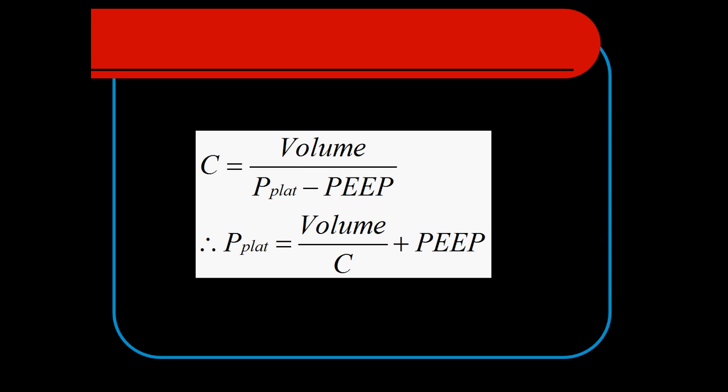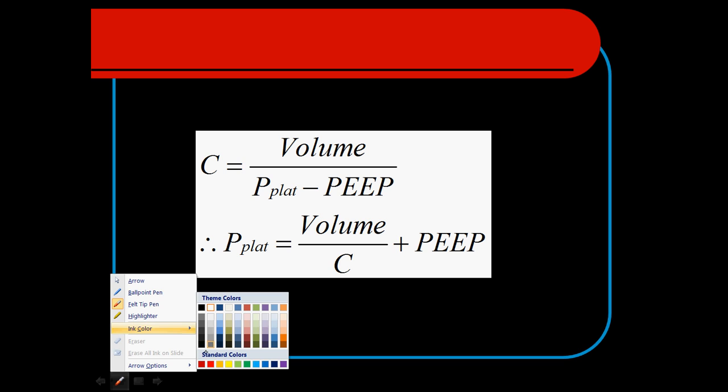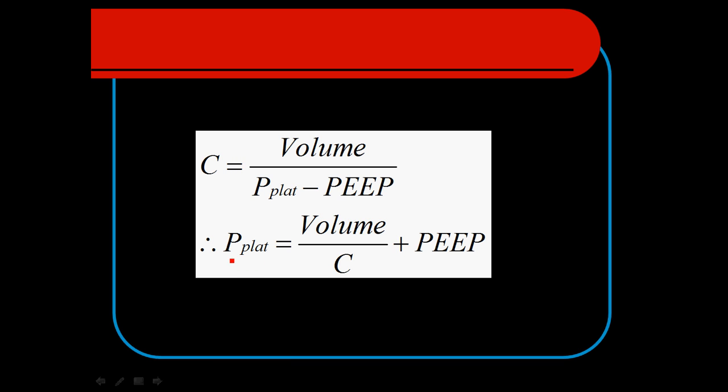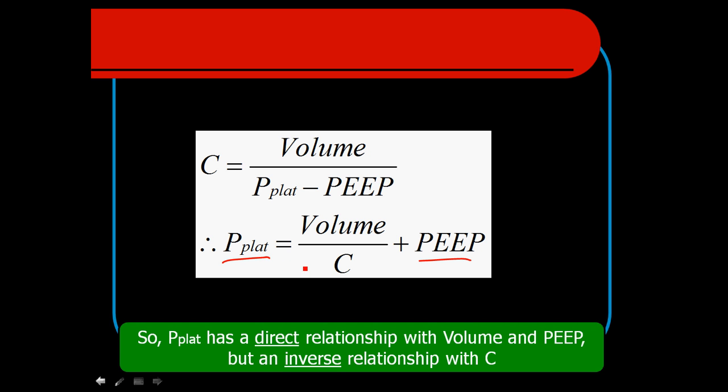That P-plat, which is a critical element because that's going to be determining how much damage we're doing to our lungs, how much pressure we're delivering to the lungs, is due to volume and compliance. Also, the PEEP clearly is part of this. So any time we increase the PEEP, we're going to be increasing our P-plat.